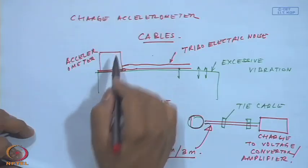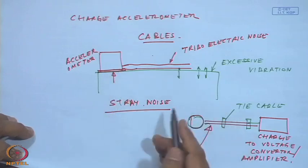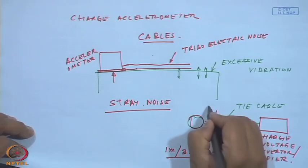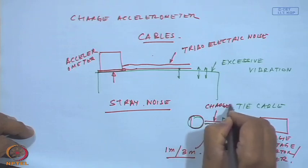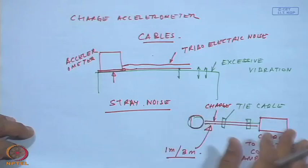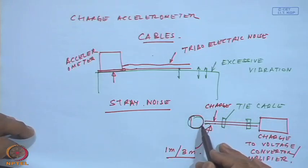This precaution is necessary for charge-type accelerometers. These issues do not arise with ICP-type accelerometers, because the cable carries a voltage signal rather than charge. With charge-type accelerometers, the charge must be converted to voltage immediately and then transmitted over long distances — sometimes up to 100 meters away. A 100-meter triboelectric cable whipping around would generate excessive noise and ruin the vibration measurement.